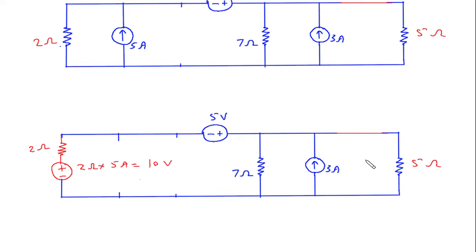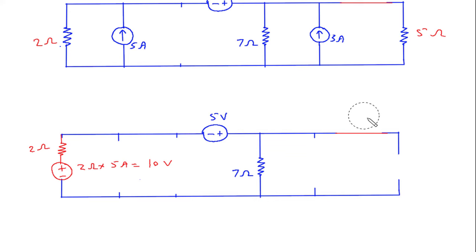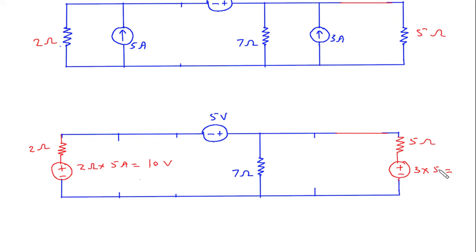Also this will be 5 Ohm. This current source is in the upward direction, so this will be positive and this will be negative. So this will be 3 into 5, which is 15 Volt — current into resistance equals 15 Volt.